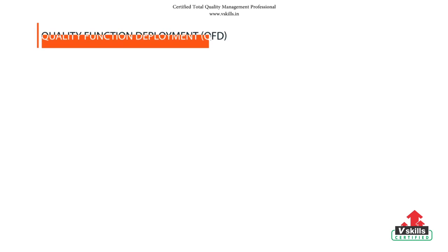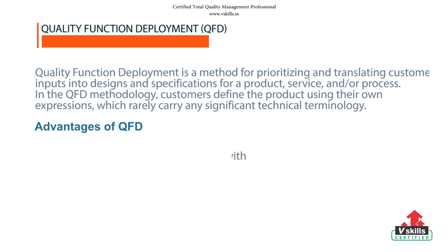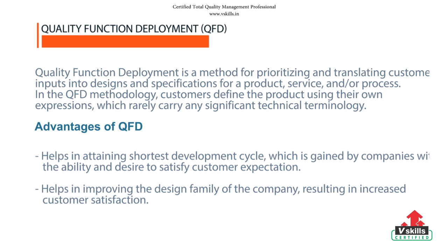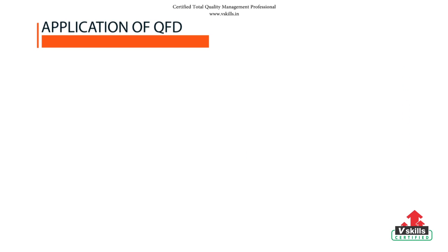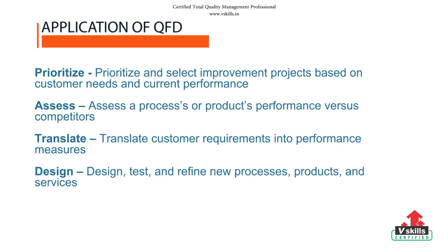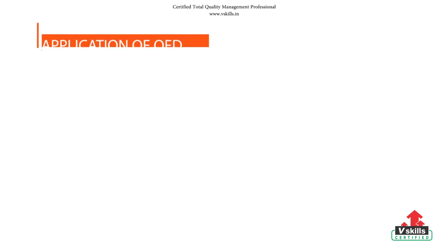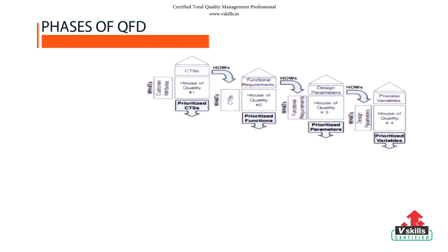Quality Function Deployment (QFD) is a planning tool that relates a list of delights, wants, and needs of customers to technical and functional requirements. QFD is a robust method having many variations in applications such as prioritize, assess, translate, and design. QFD is accomplished by multidisciplinary DFSS teams using a series of charts to deploy critical customer attributes throughout the phases of design development.